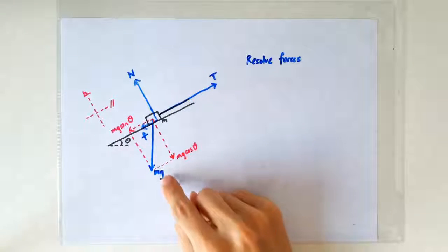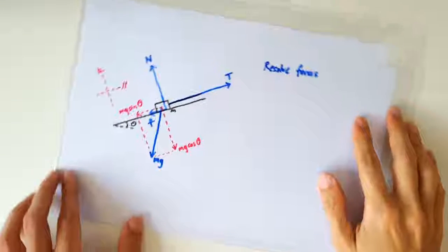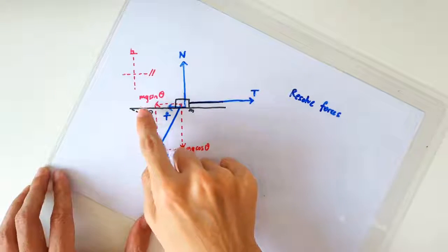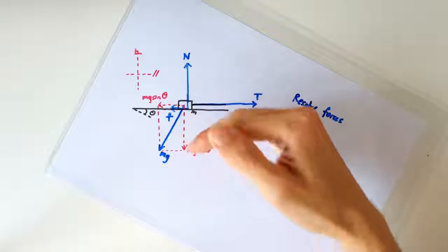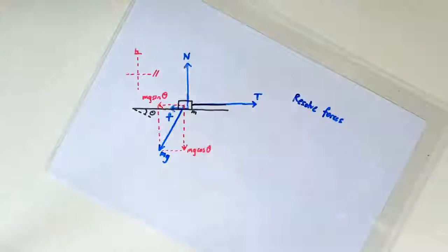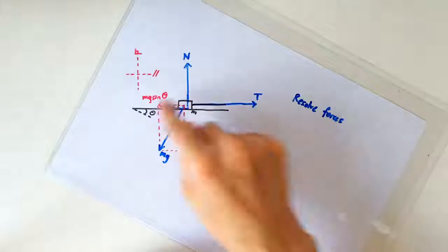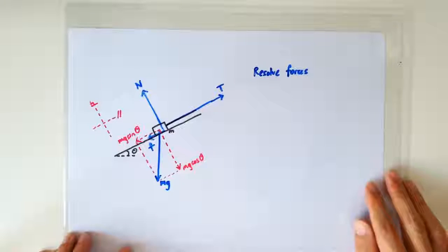If you have trouble resolving mg into the mg cosθ and sinθ, maybe you want to try rotating the paper until the slope now becomes a horizontal surface, and the weight is no longer a vertical force but a slanted force. So now it's as if you want to resolve this non-vertical force into its vertical and horizontal components. So hopefully you can see the mg sinθ and cosθ, and then after that you just rotate the paper back.